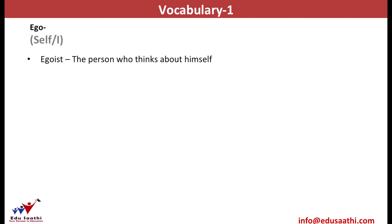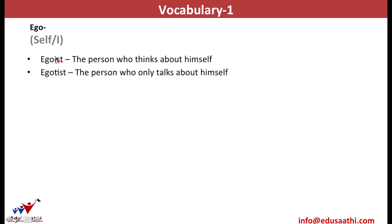Thus, egoist is any person who thinks about himself. It would be very beneficial for us to know that any word that ends in -ist becomes an adjective. Thus, egoist is an adjective for someone who keeps himself prior to other people. Then, what do we call such a person who believes in bragging about himself? We call such a person an egotist — one who is habitual of talking and bragging about himself.